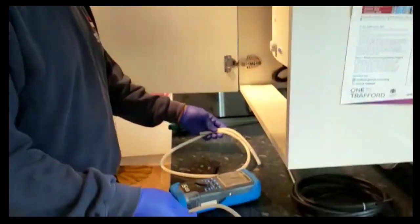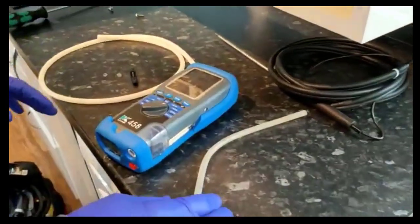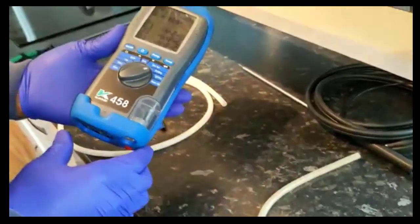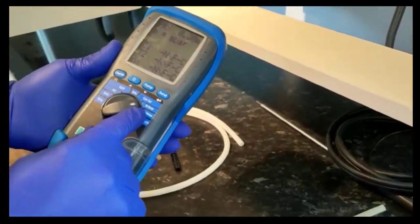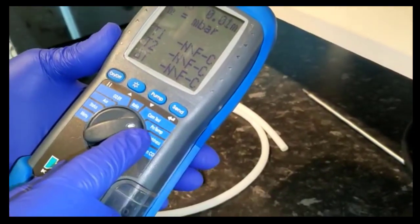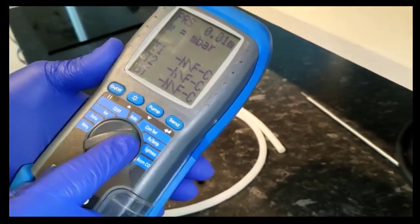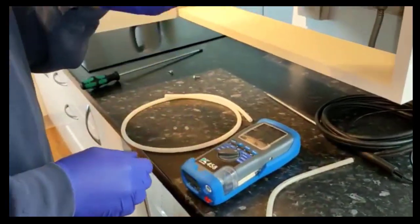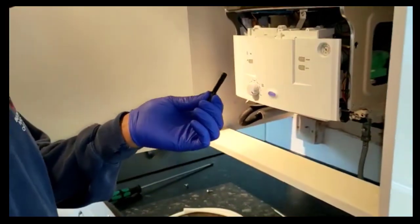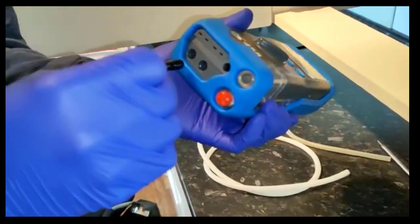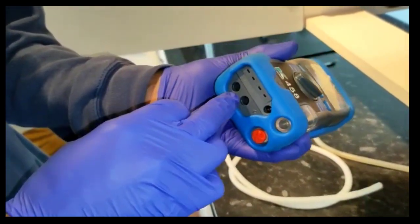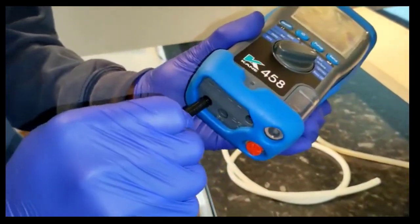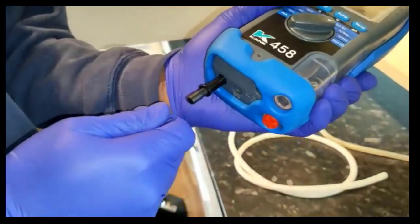So we've got these tubes here. This is our Kane analyzer and I've got it set here on the pressure setting, you can see there. So you put it to that setting, then you've got this connector here which you're going to put into the P1, shove that in all the way in.